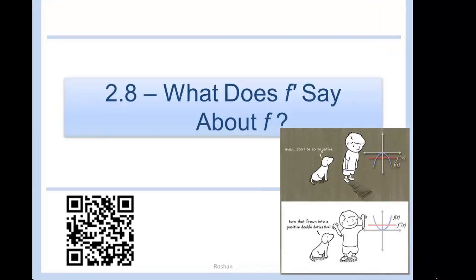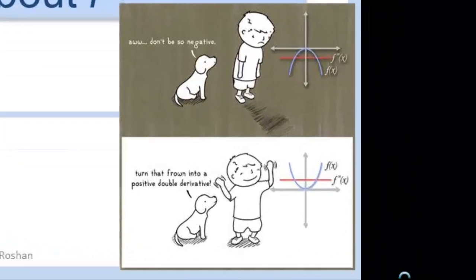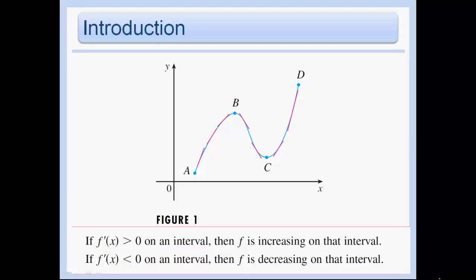What does f prime say about f? We've seen before that if the derivative is positive on an interval, then f is increasing on that interval. f prime positive means that the function is increasing. Similarly, if f prime is negative, then the function is decreasing.